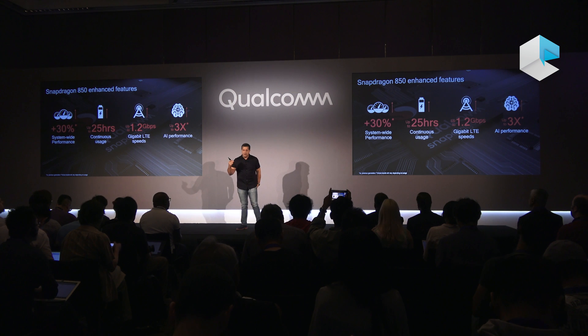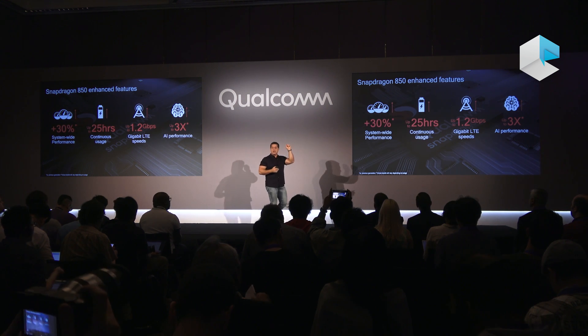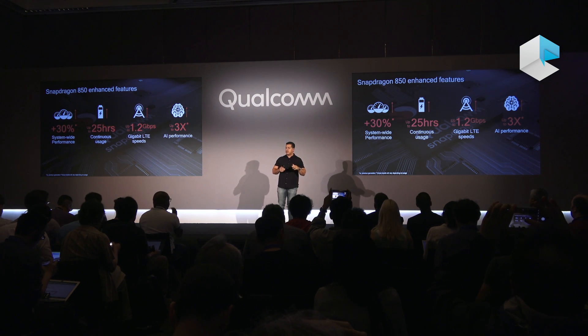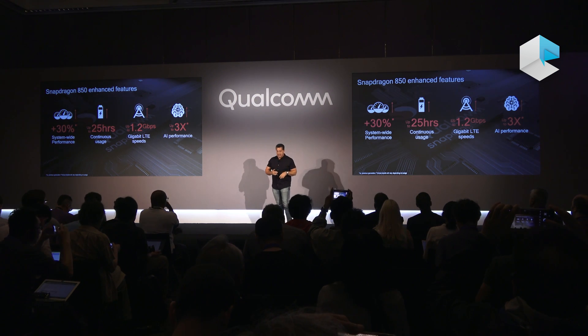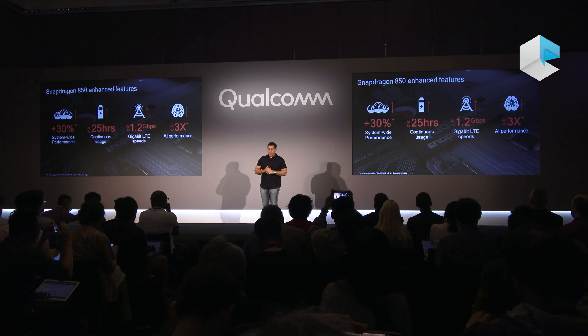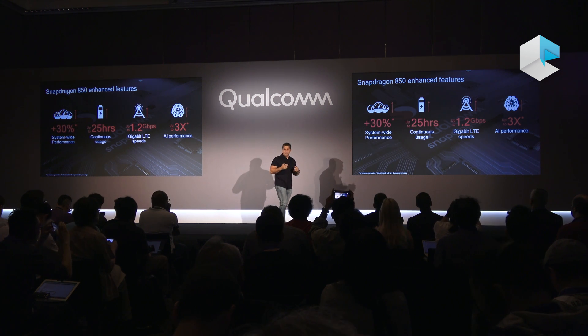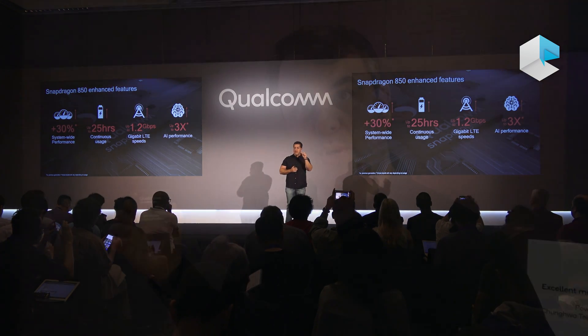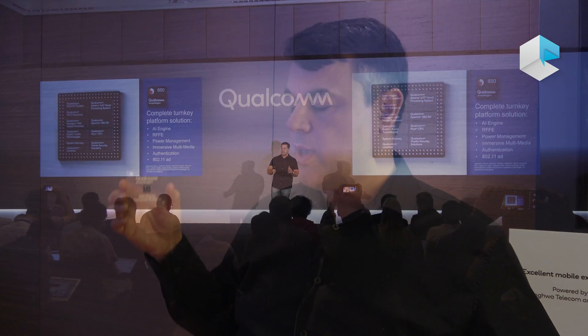New capabilities in the SDM 850 platform: over the previous generation 835, we have about a 30% improvement in overall performance — that's graphics and CPU performance. The LTE speeds have also improved from a 1-gigabit modem to a 1.2-gigabit modem between the 835 and the 850 platform. We also have better power consumption, up to 20% improvement in power consumption for search and use cases.